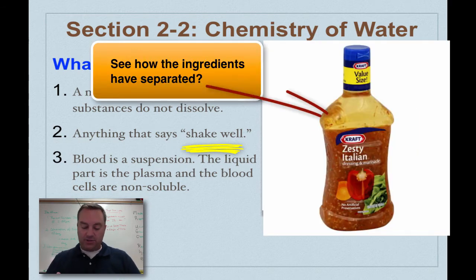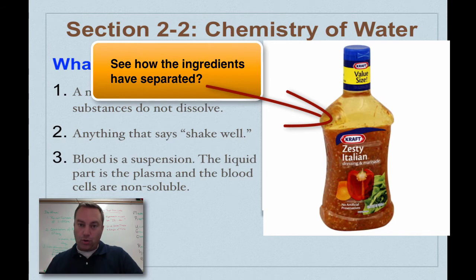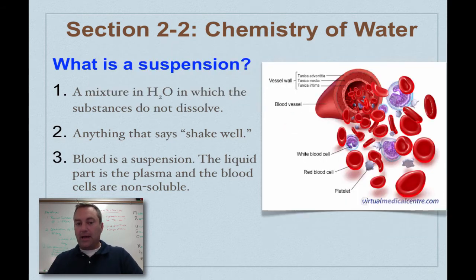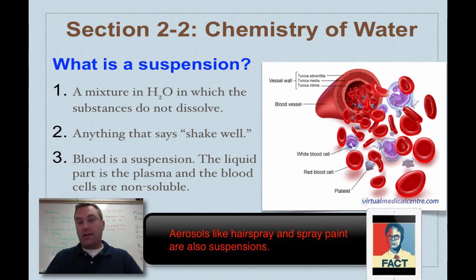Think of salad dressing. If you took an antibiotic that's in a liquid, those are all suspensions. Now within you and other mammals, blood is a suspension. The liquid part of the blood is called plasma, and then the things that do not dissolve in the water but are suspended or floating around in it, those would be your various blood cells.